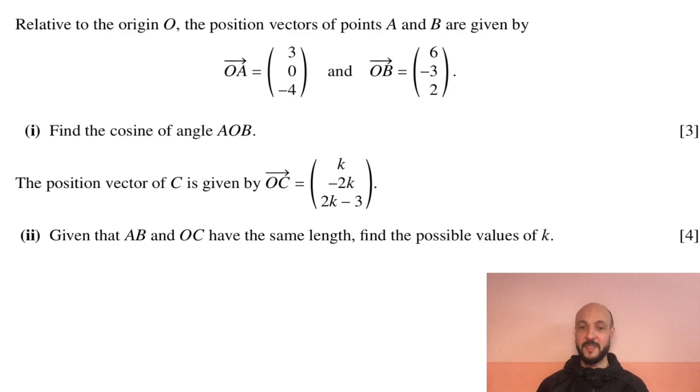We'll start by reading through the question. Relative to the origin O, the position vectors of points A and B are given by directed vector OA equals 3, 0, minus 4 and directed vector OB equals 6, minus 3, 2.